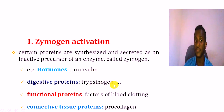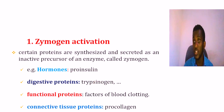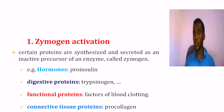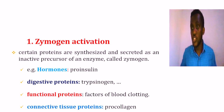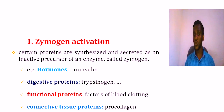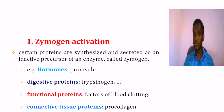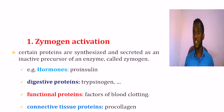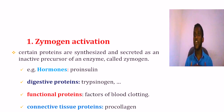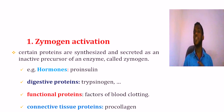This is pepsinogen. Pepsin is the normal active enzyme and pepsinogen is its inactive precursor. Pepsin functions in an acidic environment — specifically in the stomach, which contains hydrochloric acid.